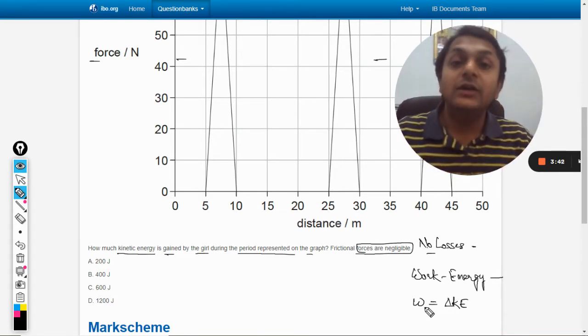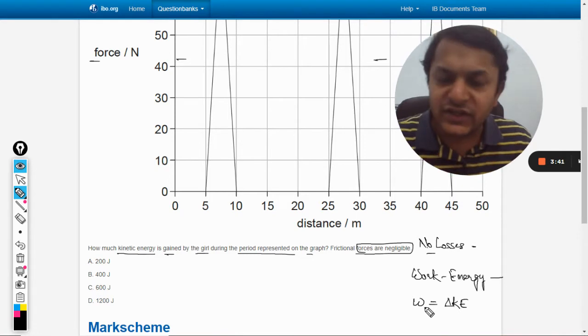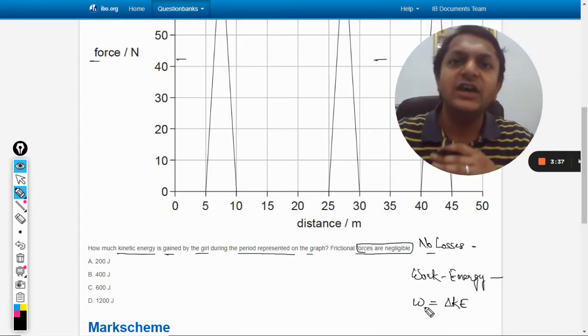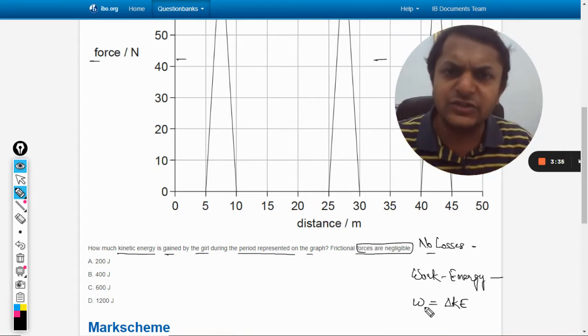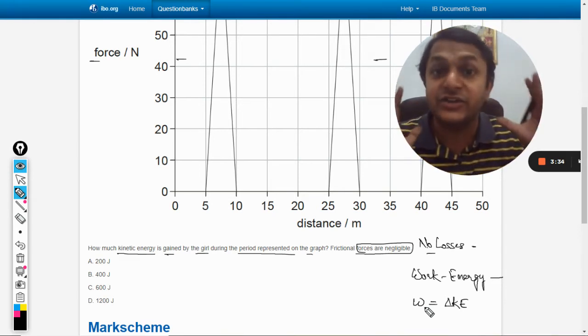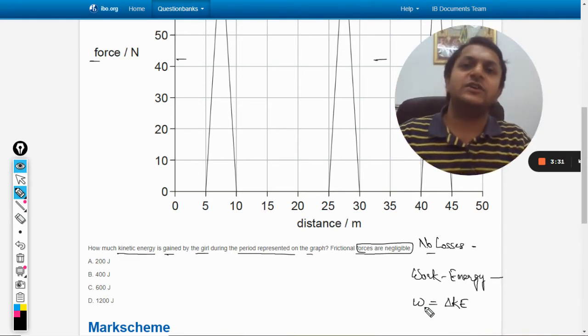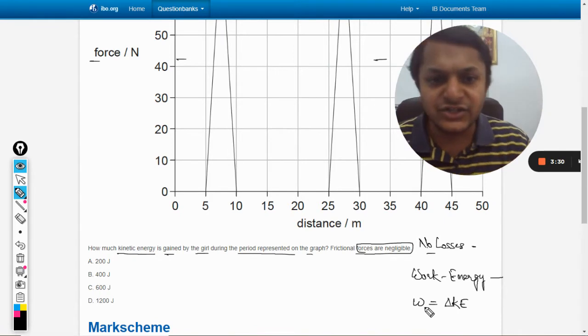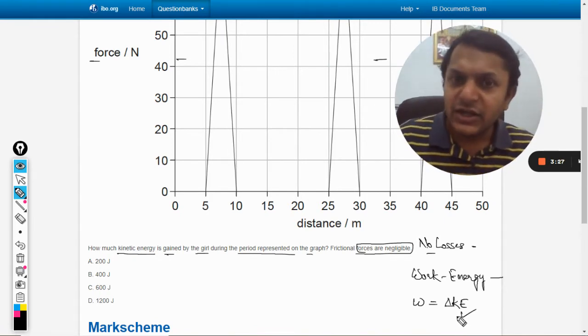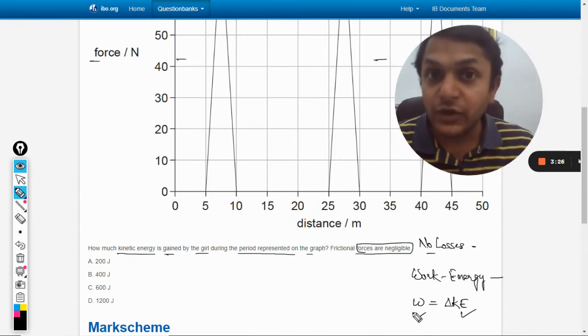This will be equal to the change in kinetic energy. Because the girl is on a skateboard and she's literally on a horizontal surface, there is no change in potential energy. So work equals change in kinetic energy, and that's what we want to find.